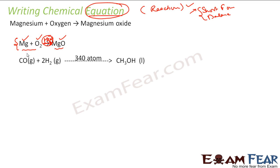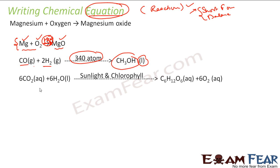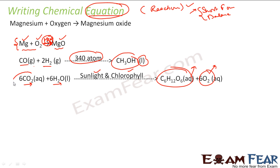For example, carbon monoxide plus hydrogen — both gases — with 340 atmospheres gives CH3OH, which is liquid. Another example: carbon dioxide plus water, in the presence of sunlight and chlorophyll — this is the photosynthesis process. The tree takes carbon dioxide and water, and in presence of sunlight and chlorophyll, it produces an aqueous solution and oxygen, which we breathe.